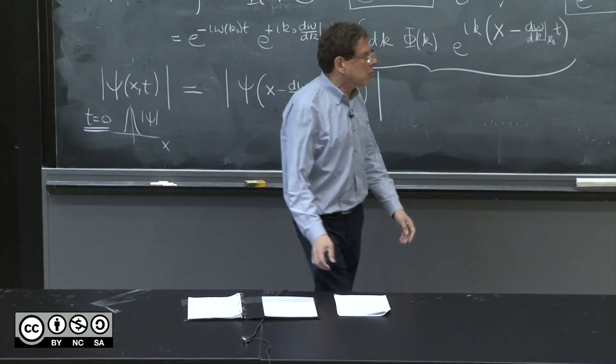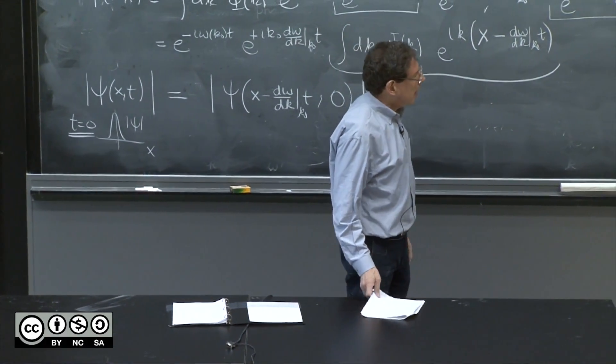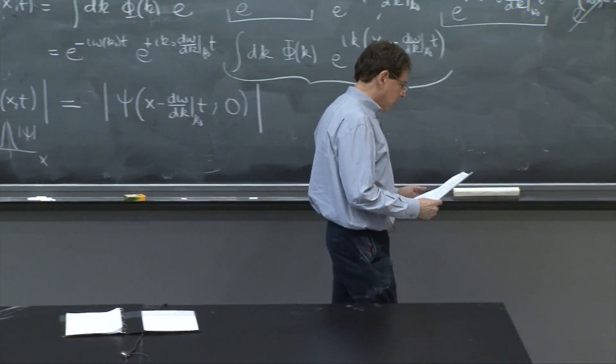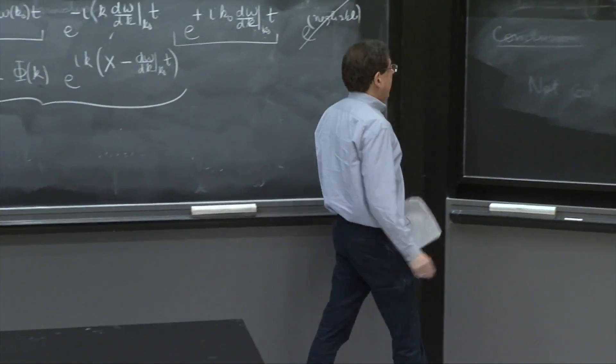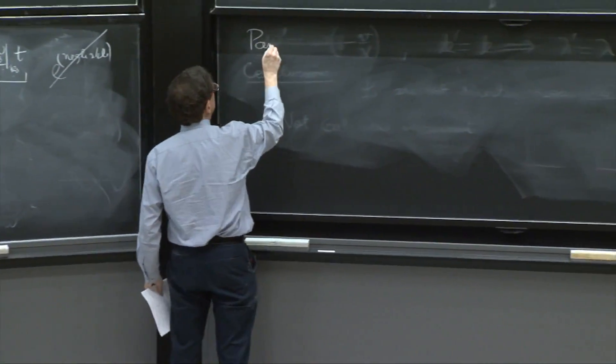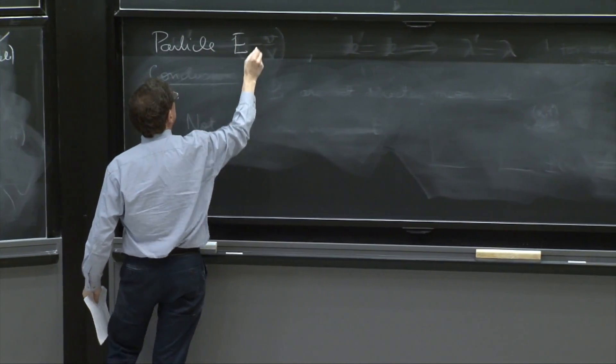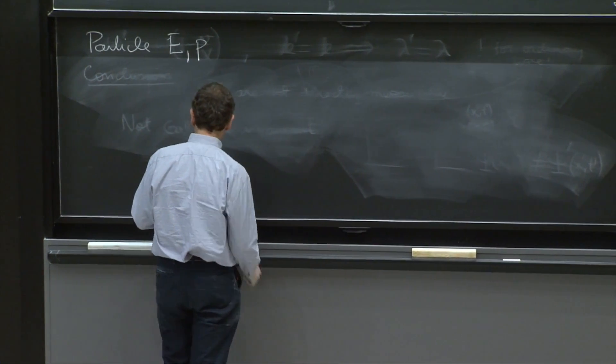So what are we trying to do? We're going to try to write a matter wave. So we have a particle with energy E and momentum p.